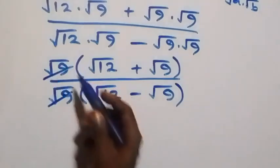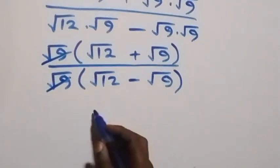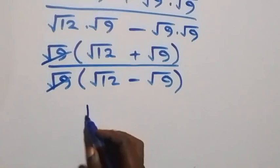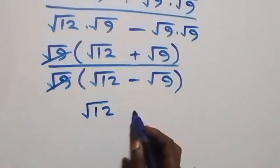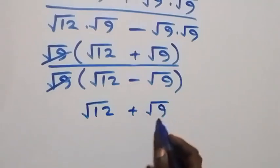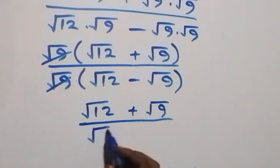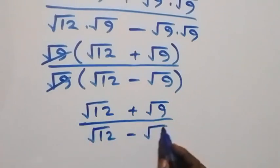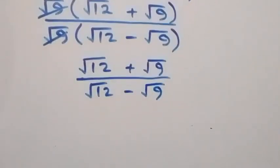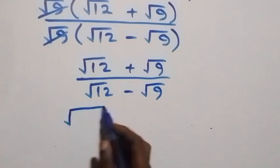Then root(9) cancels with each other, and here we have root(12) plus root(9) over root(12) minus root(9).